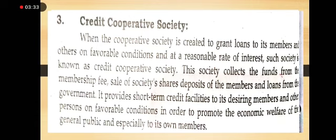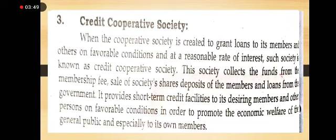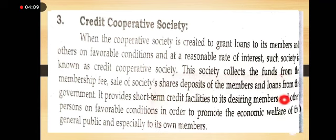The third kind is credit cooperative societies. When a cooperative society is created to provide loans to its members at favorable conditions with a low rate of interest, such a society is known as a credit cooperative society. This society collects funds from membership fees, the sale of society shares, deposits of members, and loans from the government. It provides short-term credit facilities to its members and other persons on favorable conditions for the common welfare of the general public.